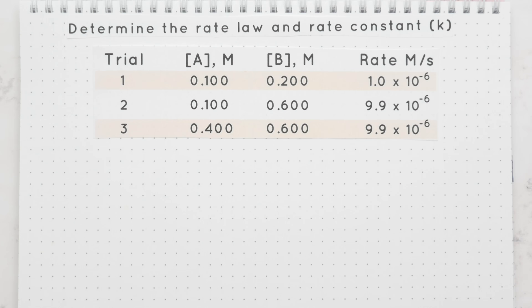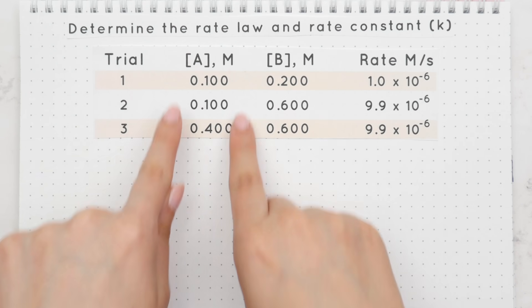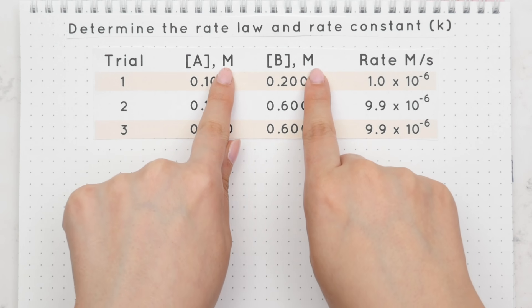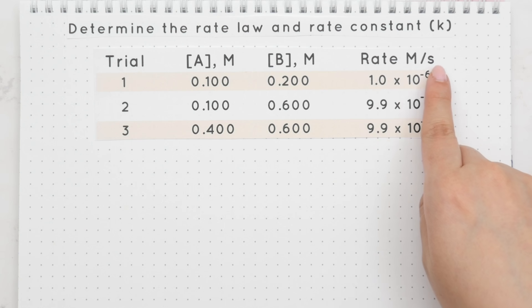Now this question gives us a table that shows three different trials. The concentrations of our reactants A and B measured in molarity and the rates of each trial measured in molarity divided by seconds.